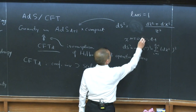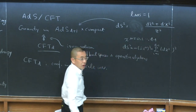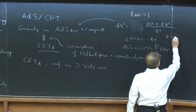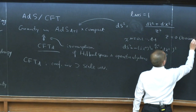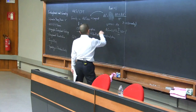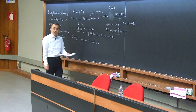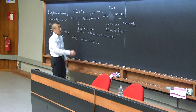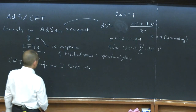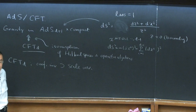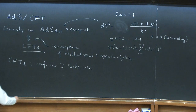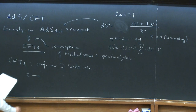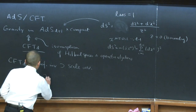Under this correspondence, we are to identify this coordinate on the boundary at Z equals zero to the coordinate of this conformal field theory — I'm going to use the same X. And suppose I analytically continue this time coordinate so that we are now in Euclidean signature D-dimensional space. A conformal transformation is a rescaling of these coordinates by some factor.